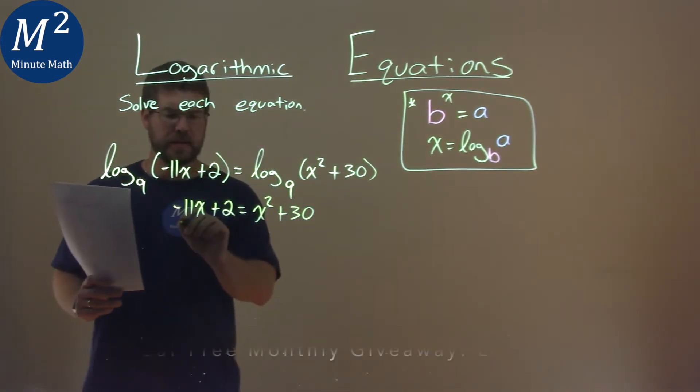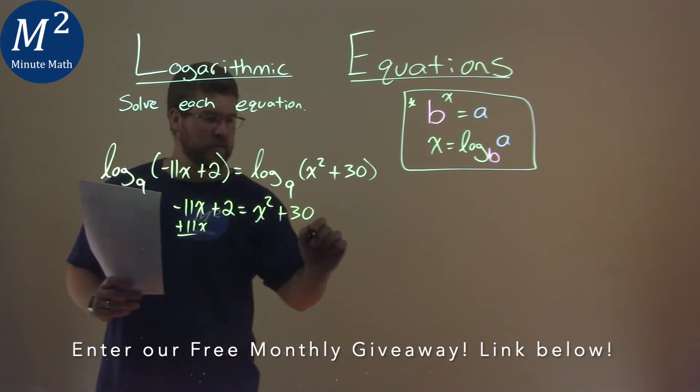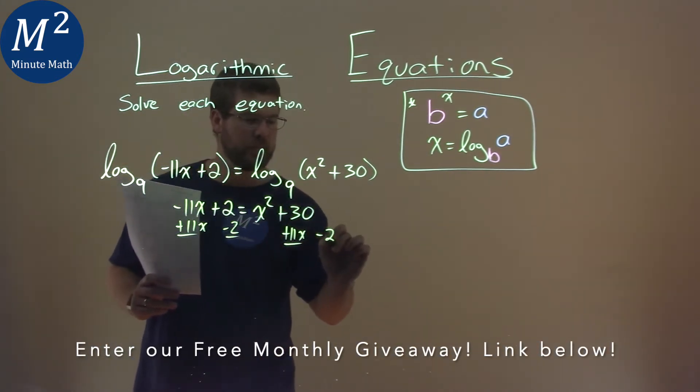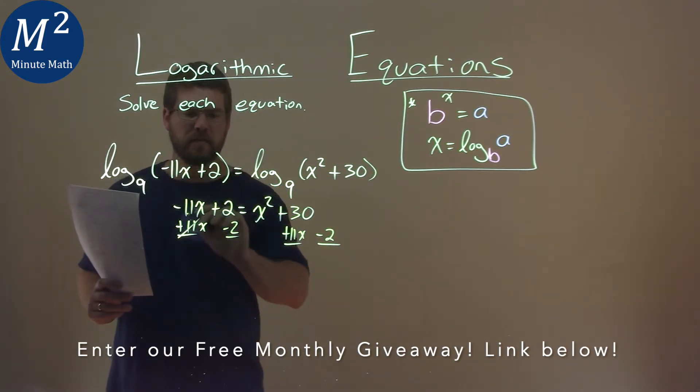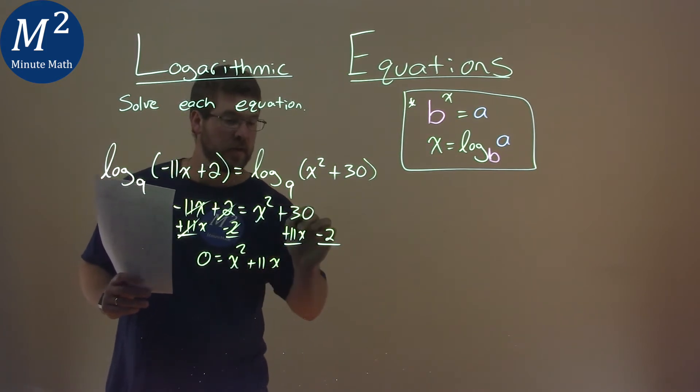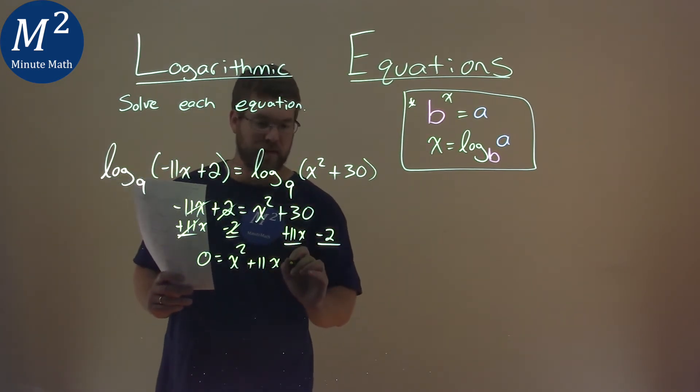Let's bring everything to the right-hand side, add 11x to both sides, and subtract 2. What do we have? The left-hand side just becomes 0. Right-hand side is x squared plus 11x, and 30 minus 2 is 28.